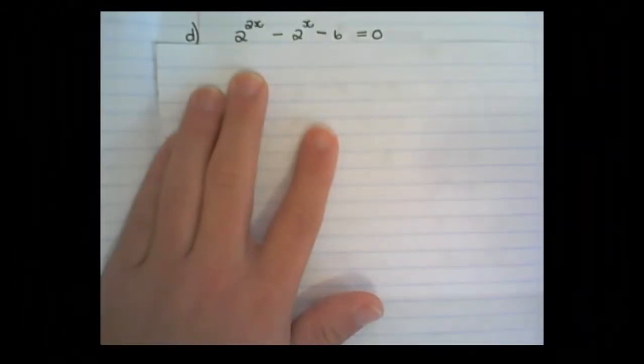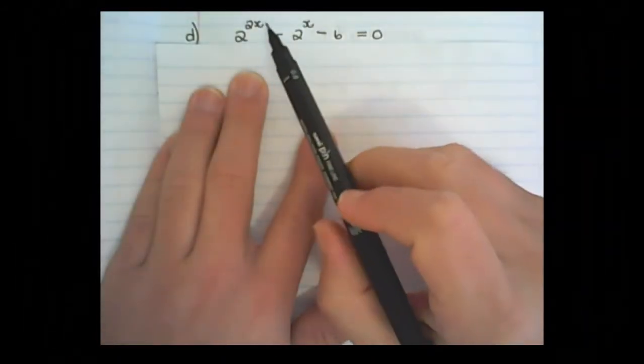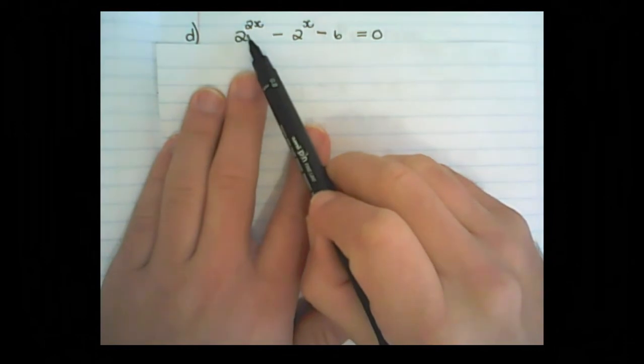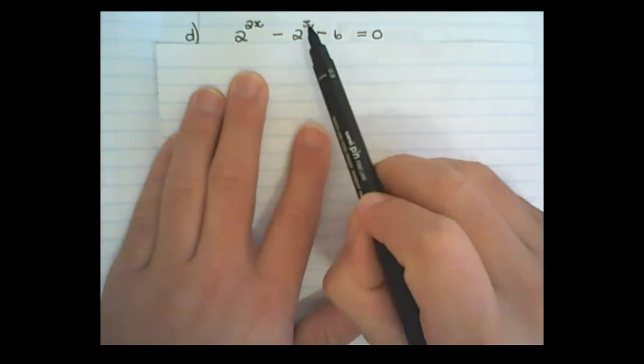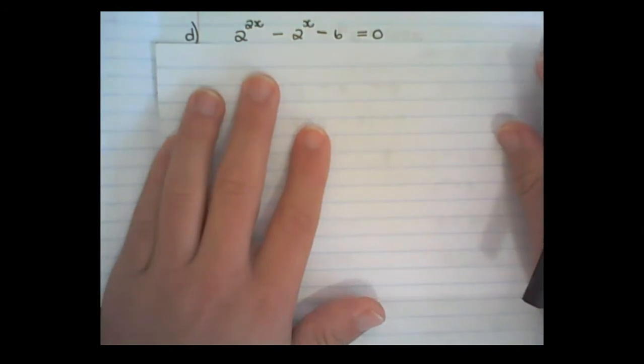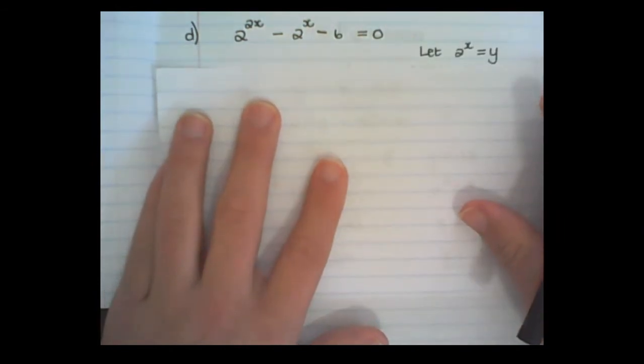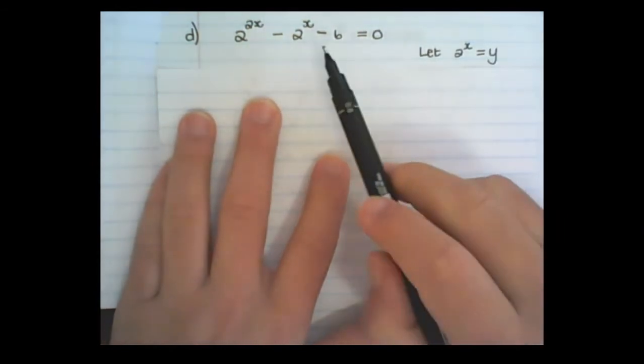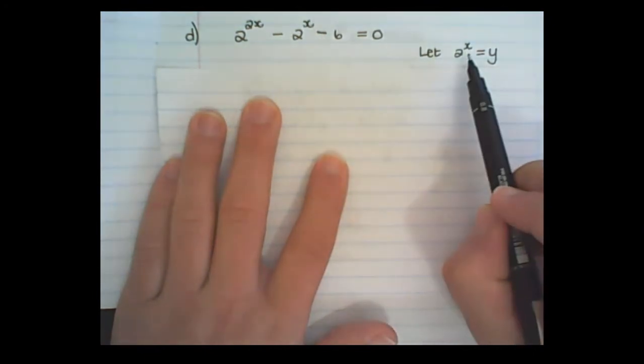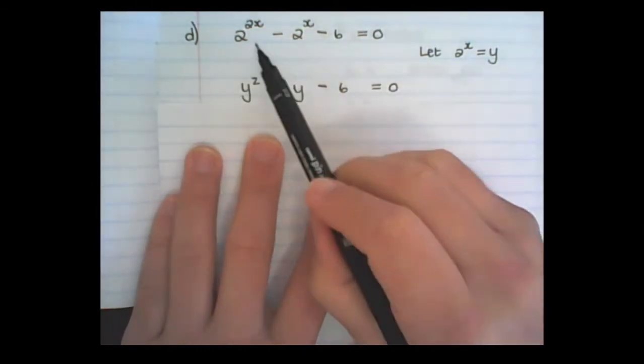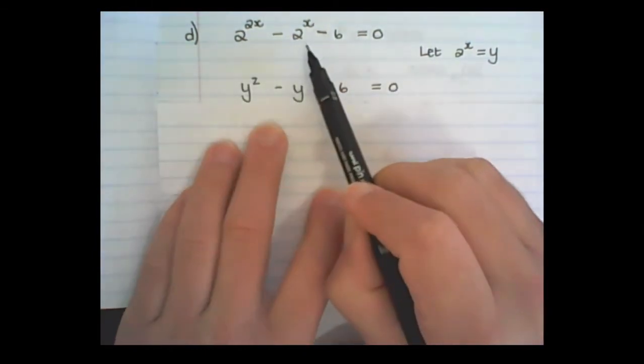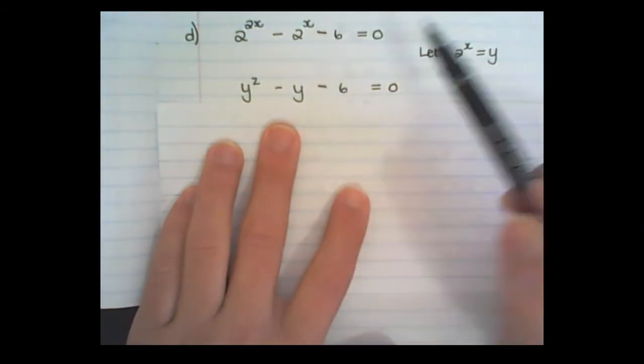We can also use logs in trinomial expressions. Some of you are already comfortable to factorize just the way it is now. But others still need to do substitution. And that is fine. So I take the middle term, 2 to the power of x, and I make that equal to y. Then the first term would become y squared. The middle term is y, and the constant would remain constant.